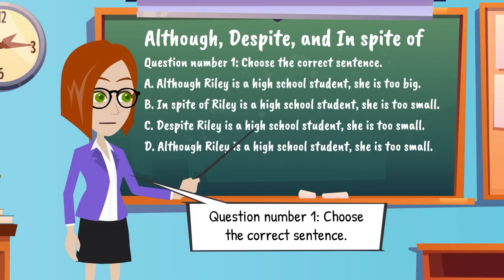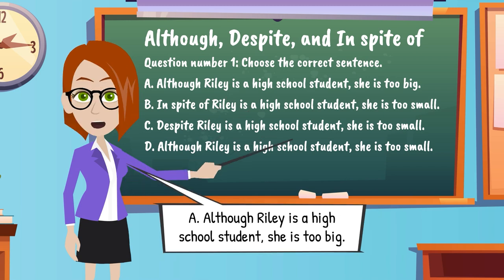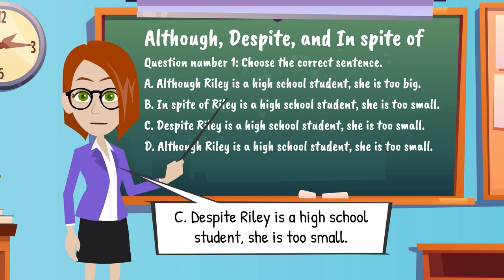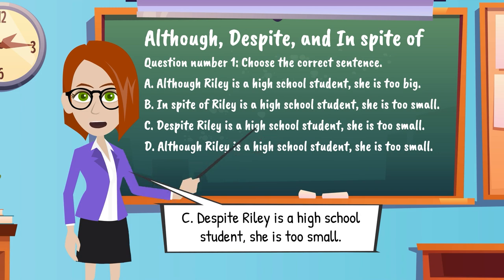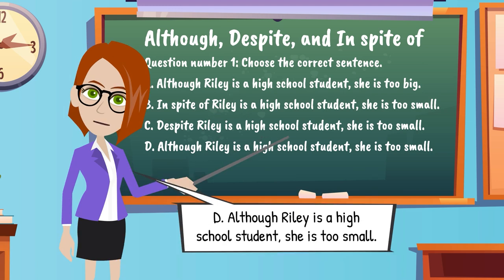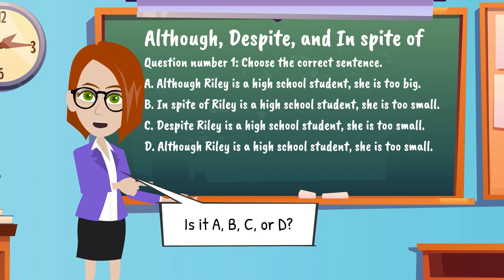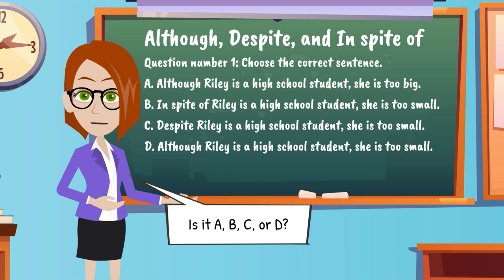Question number one. Choose the correct sentence. A. Although Riley is a high school student, she is too big. B. In spite of Riley being a high school student, she is too small. C. Despite Riley being a high school student, she is too small. D. Although Riley is a high school student, she is too small. You will have 10 seconds to pick the correct answer. Is it A, B, C, or D?